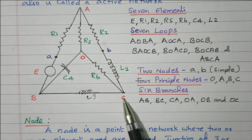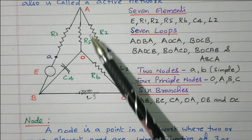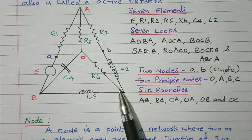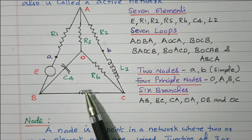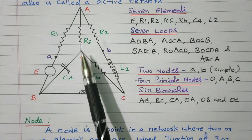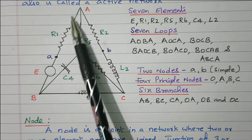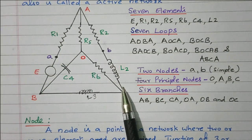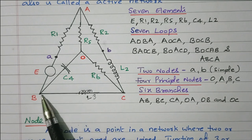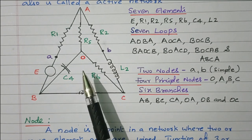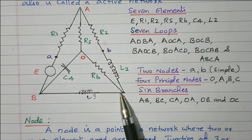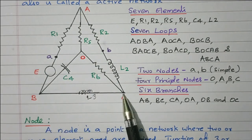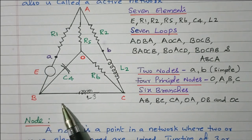The next closed path is A–O–C–A. Then B–O–C–B is another closed path — these three are the triangular loops. The fourth is B–A–O–C–B. The fifth is B–O–A–C–O. The sixth is B–O–C–A–B, which is the full outer path. The seventh is A–B–C–A. So there are seven closed paths available, all called loops.